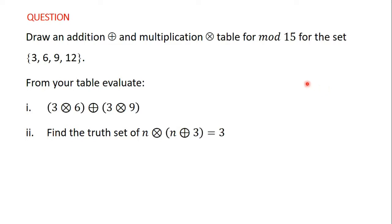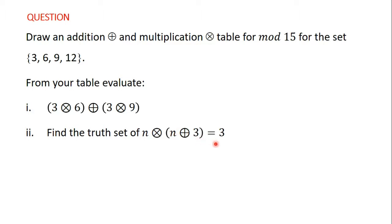Welcome back. We started solving this question in the previous video. We drew the addition and multiplication table for mod 15 on the set {3, 6, 9, 12}. In this video, we are going to use the tables that we drew in the previous video to evaluate 3 times 6 plus 3 times 9, and also find the truth set of n times (n plus 3) equals 3. So let's begin.